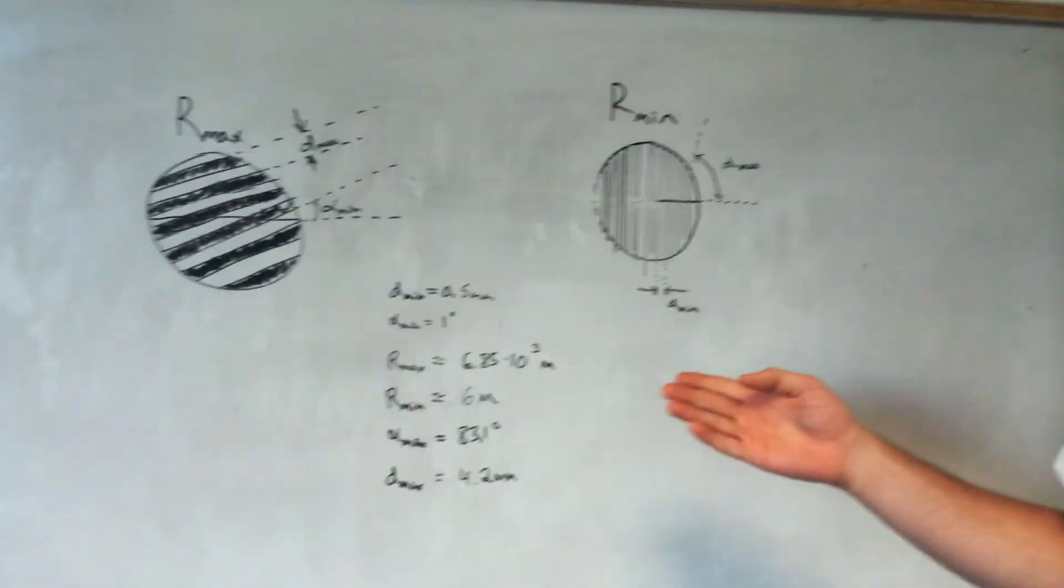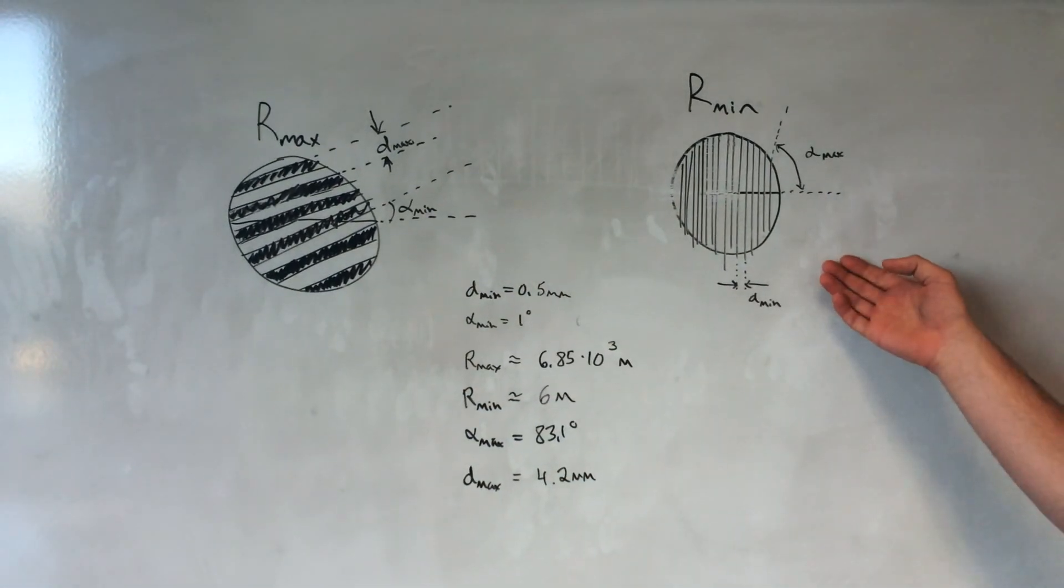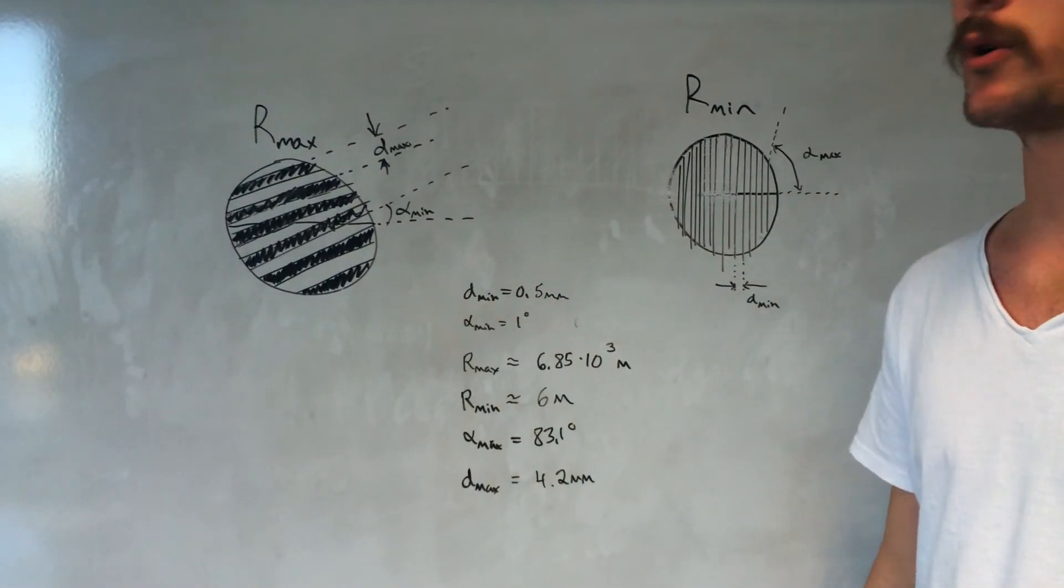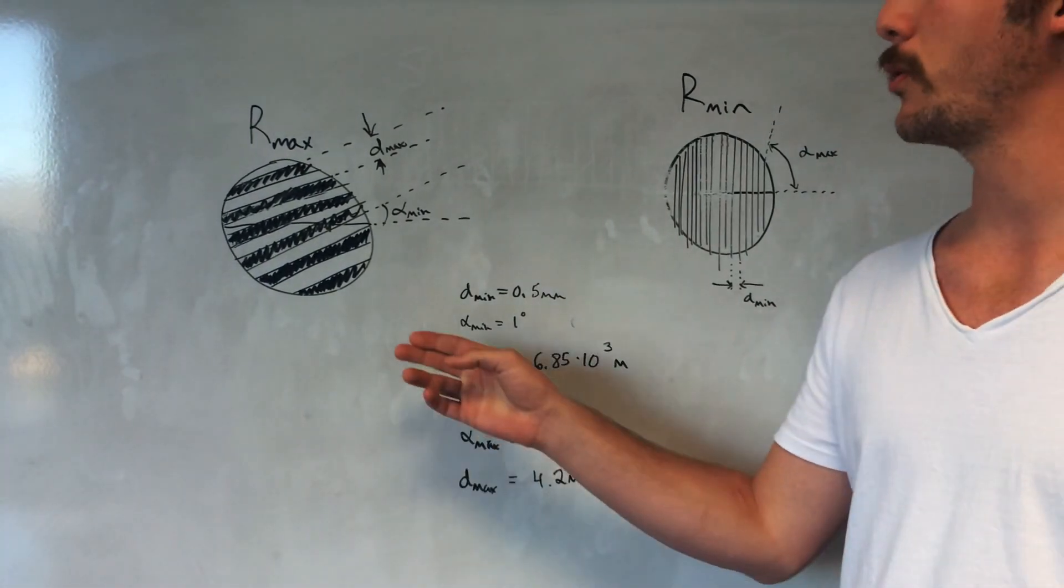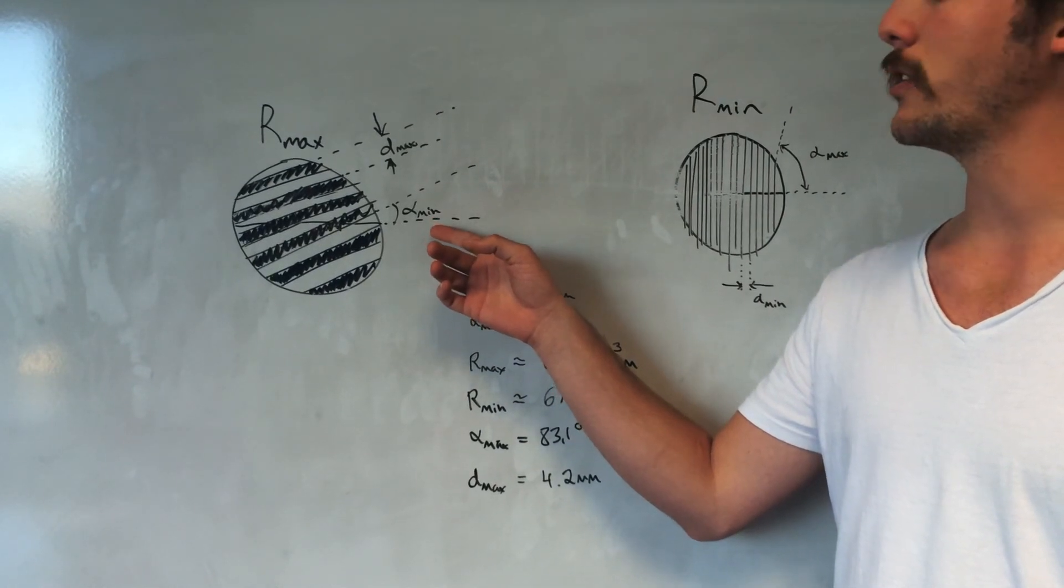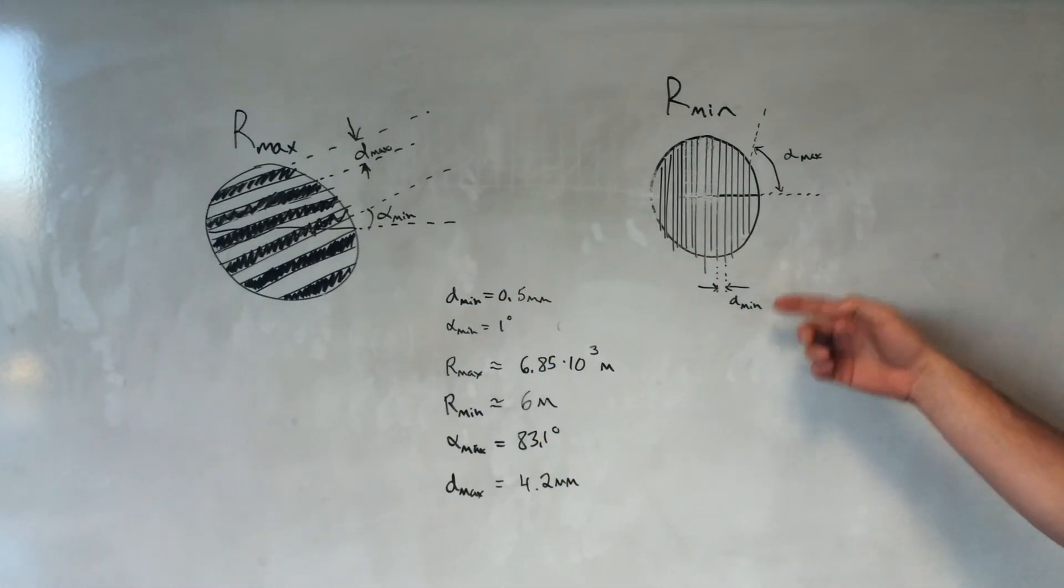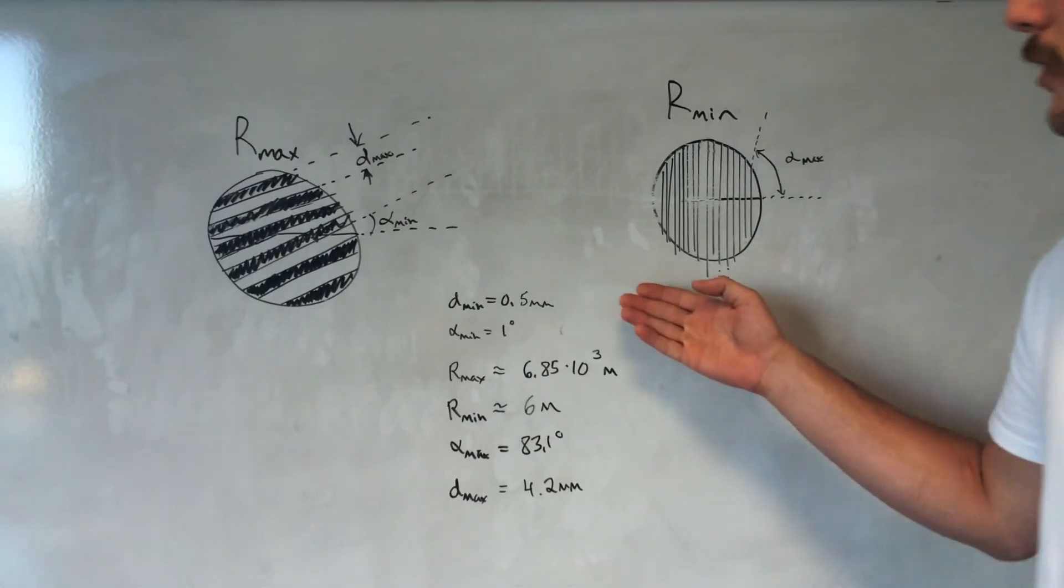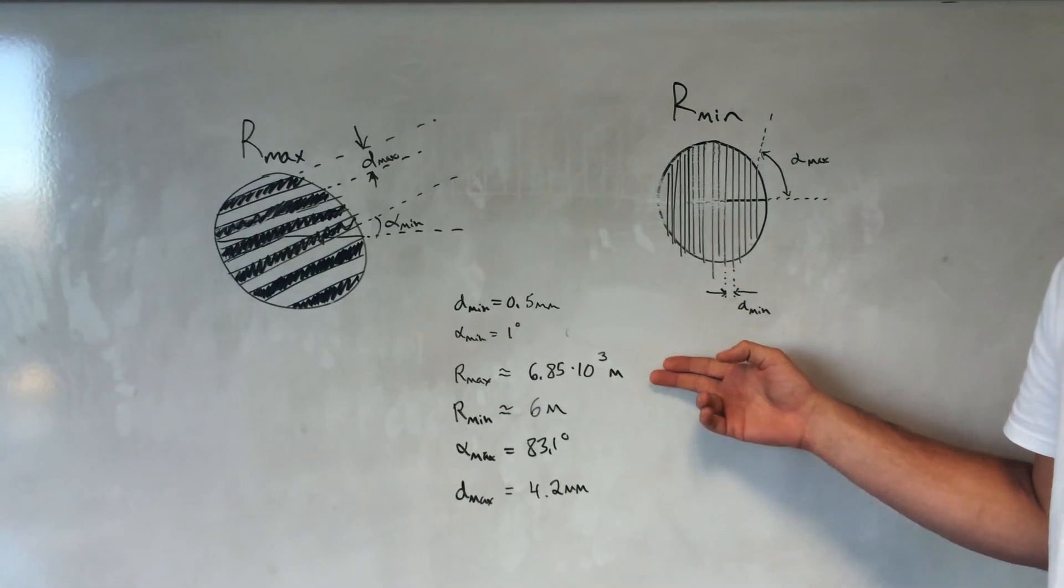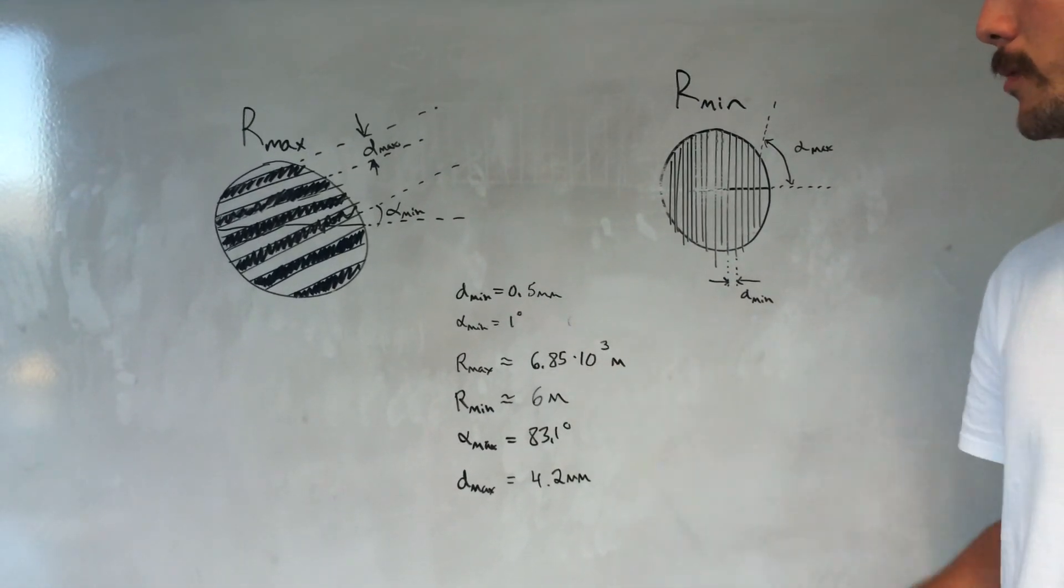So when we measure radiuses with a shear plate, you have a maximum radius and a minimum radius that you can measure. The maximum radius is approaching a collimated beam, and the minimum radius is approaching a focus point. With the maximum radius, we're limited by the angle that we can resolve with our eyes, and with the minimum radius, we're limited by the separation of fringes that we can resolve with our eyes. After doing some calculations, we got that the maximum radius that we can measure is 6.85 times 10 to the third, and the minimum is 6 meters.